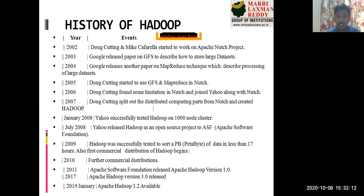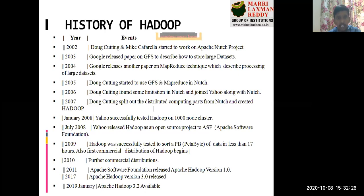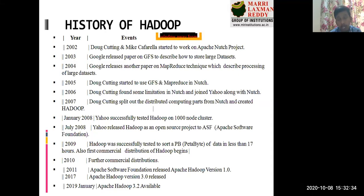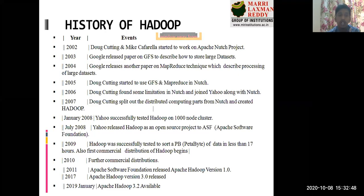In 2004, Google released another paper on MapReduce — a parallel and distributed processing technique for large datasets. In 2005, Doug Cutting started using both the Google File System and MapReduce. He thought: why use two separate things — a file system and processing separately — why not combine them into one? That idea became the concept of Hadoop.